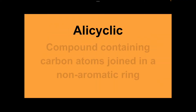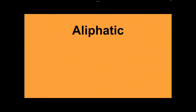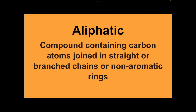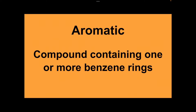Alicyclic: a compound containing carbon atoms joined in a non-aromatic ring. Aliphatic: compounds containing carbon atoms joined in straight or branched chains or non-aromatic rings. Alkyl group: a carbon group with the general formula CnH2n+1. Aromatic: a compound containing one or more benzene rings.